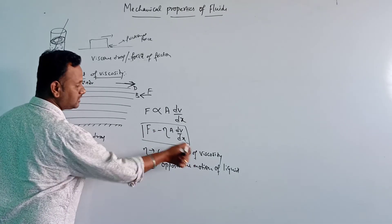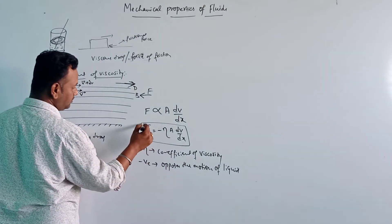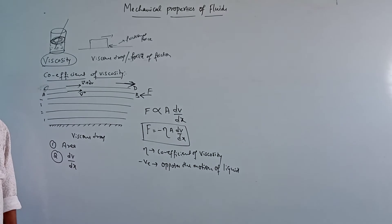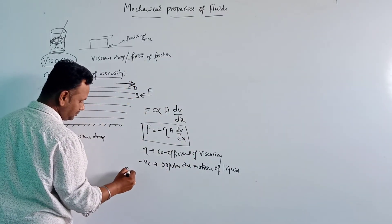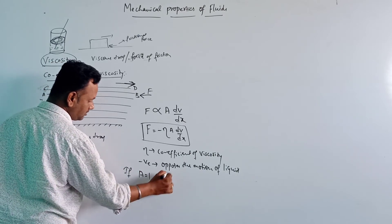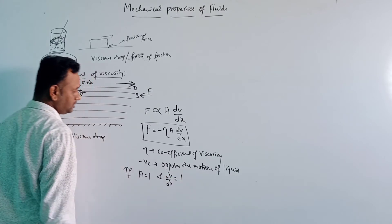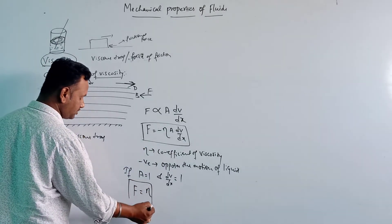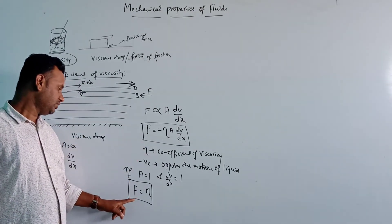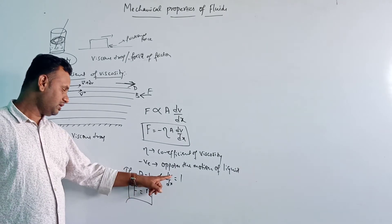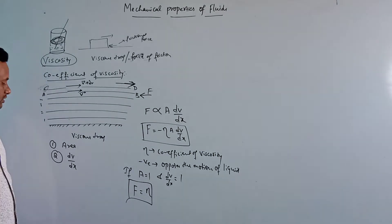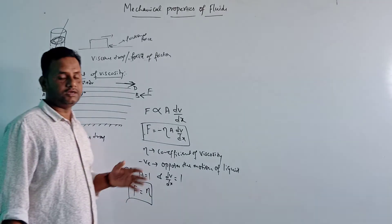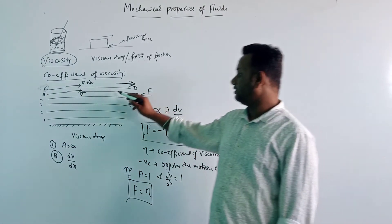Here eta is called the coefficient of viscosity — this is the equation for the viscous drag force. If A equals 1 and dV/dx equals 1, then F equals eta. Taking magnitudes, the viscous drag force equals the coefficient of viscosity when the area is unity and the velocity gradient is unity.